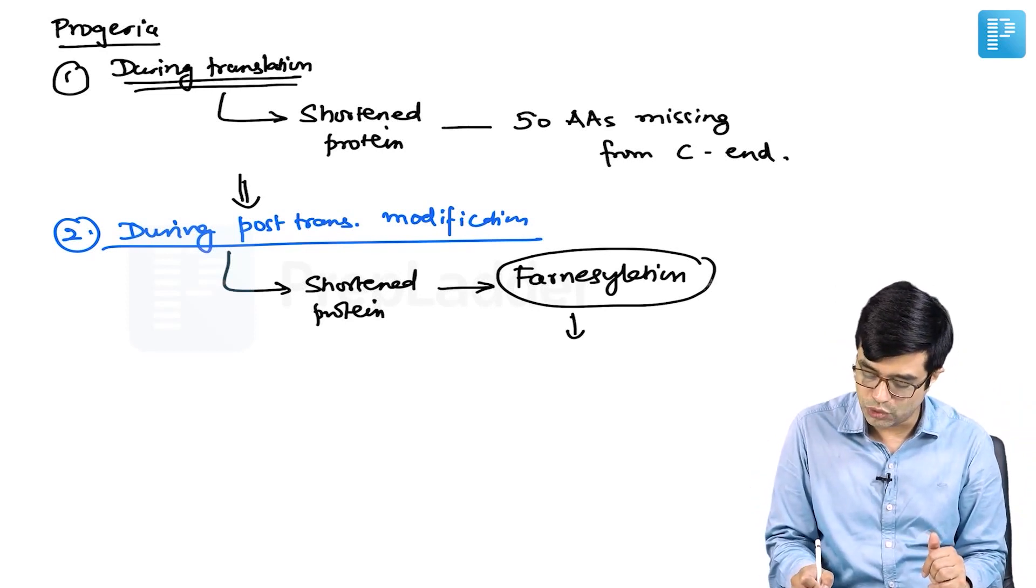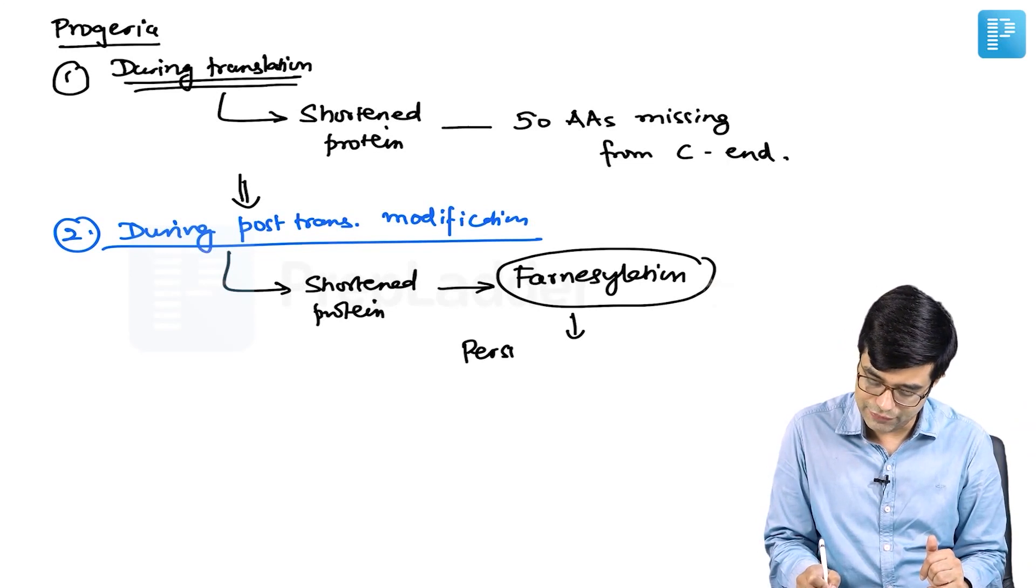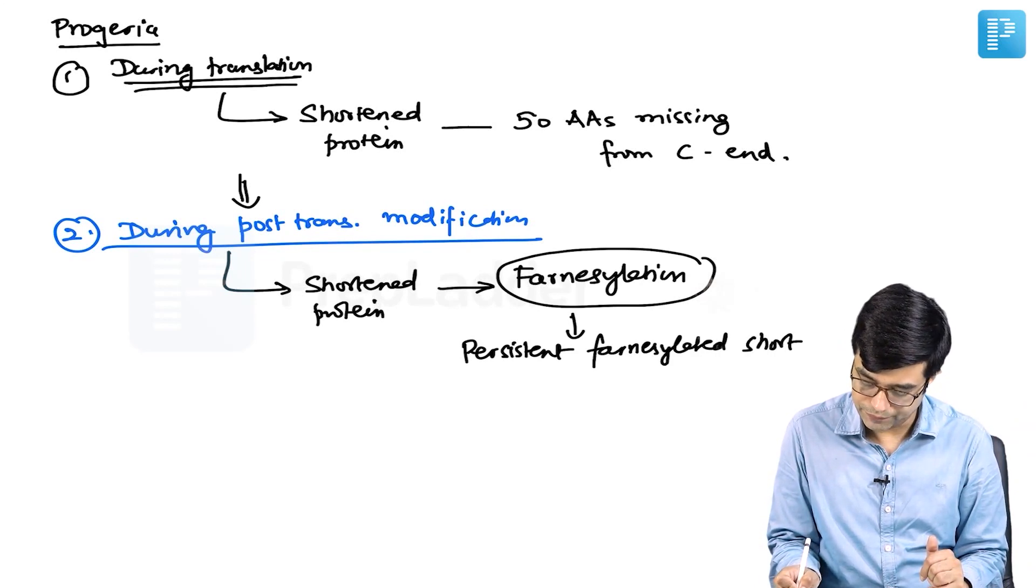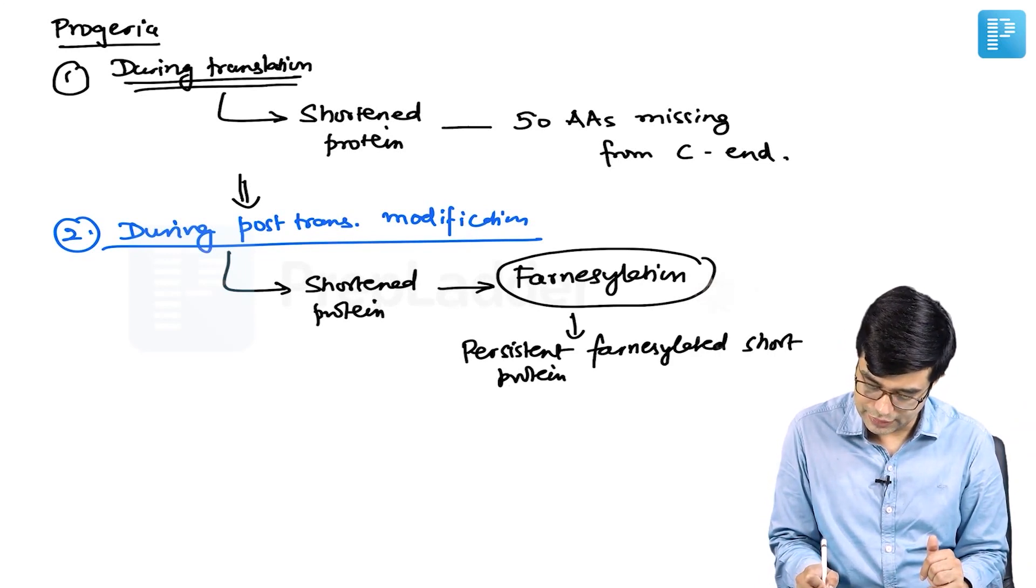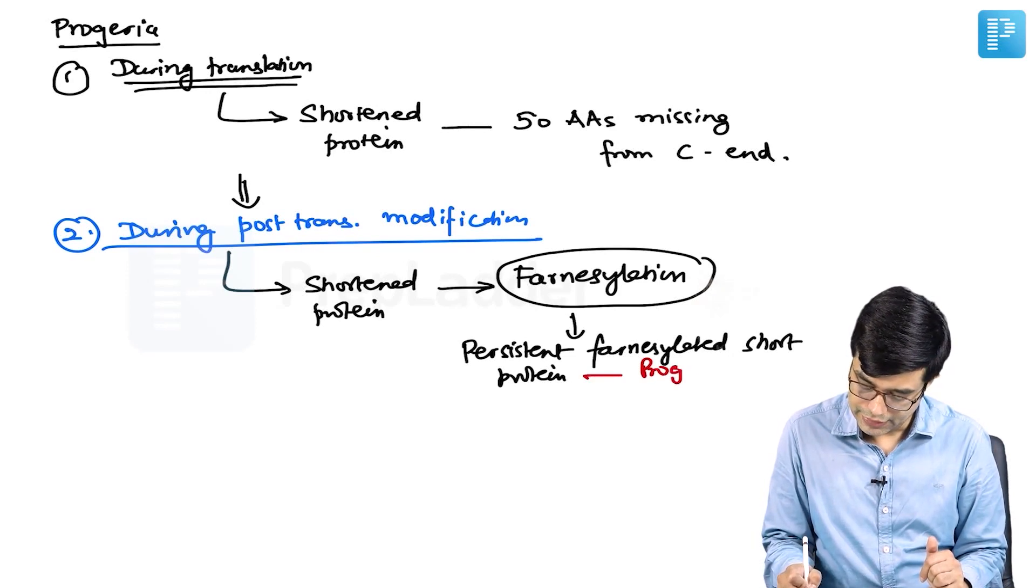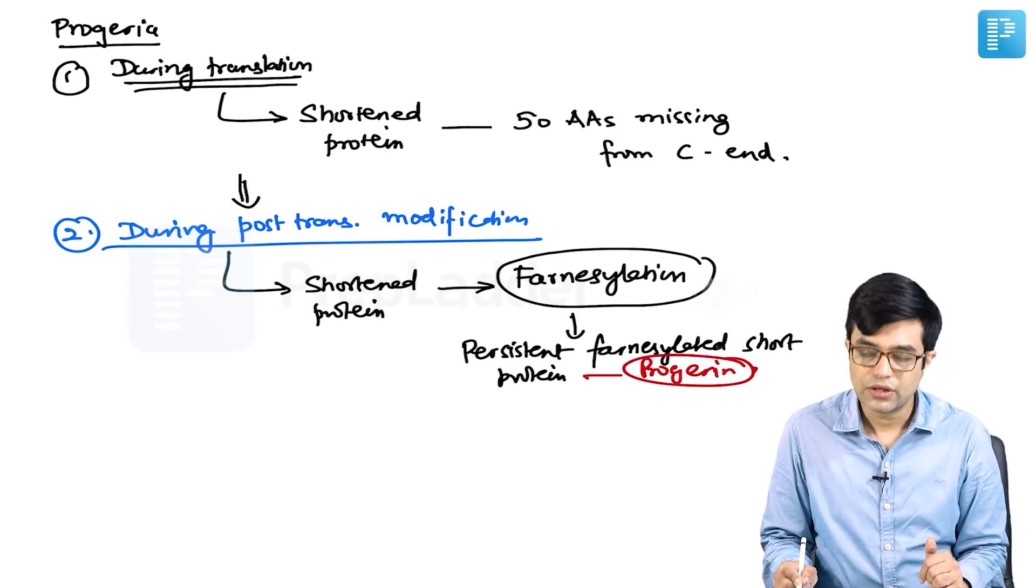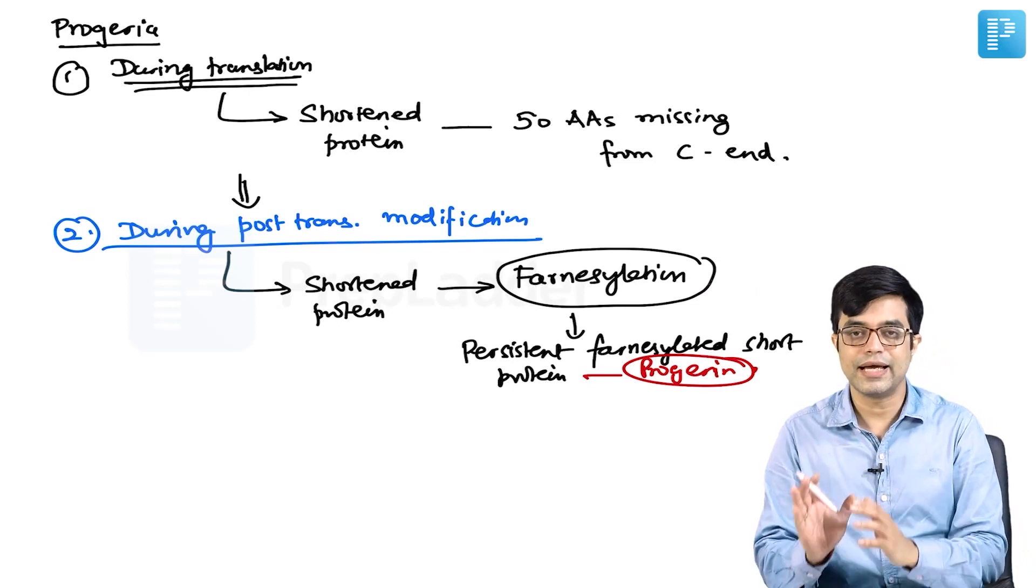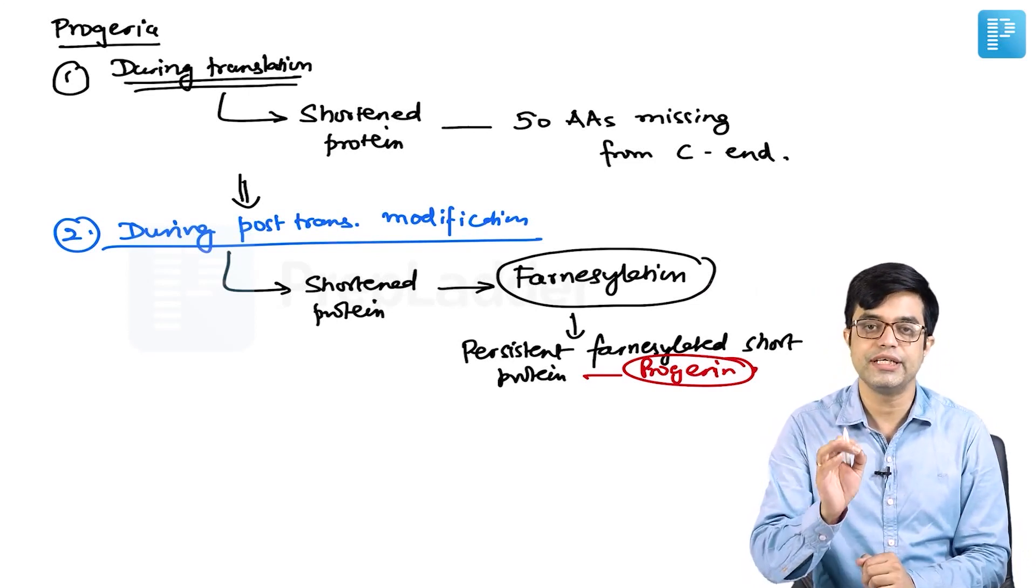This farnesylated protein, this persistently farnesylated protein short protein, is called progerin. This progerin causes damage to the nuclear membrane and this damage leads to premature aging in the patient.